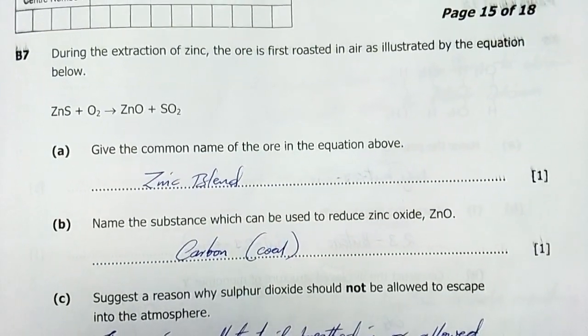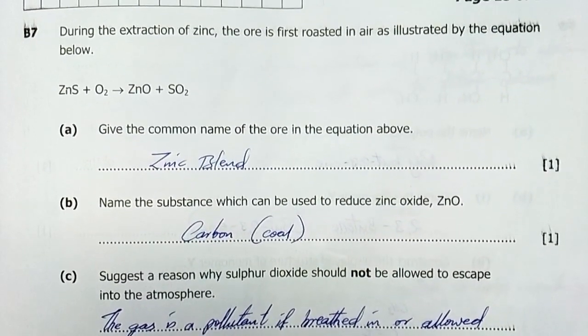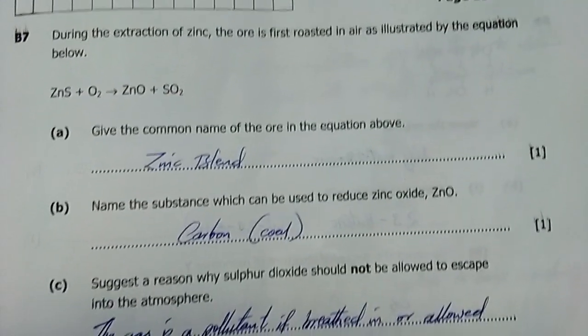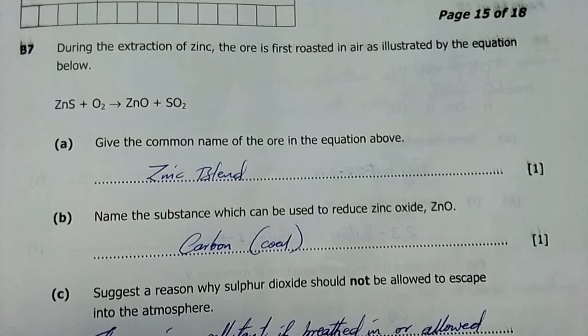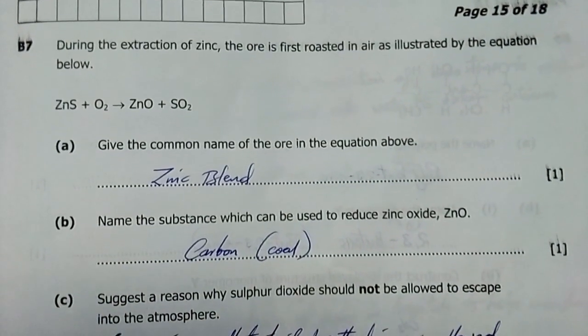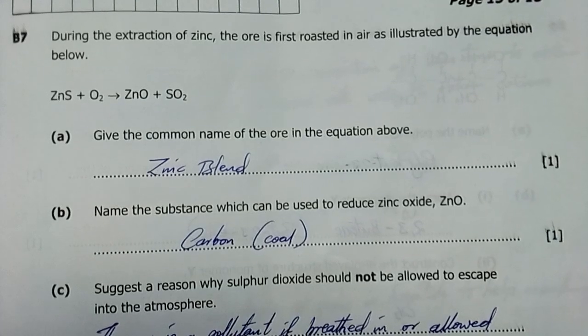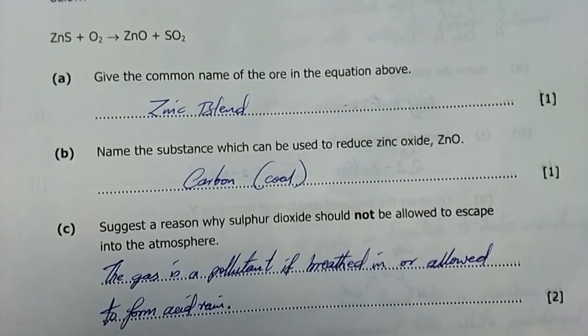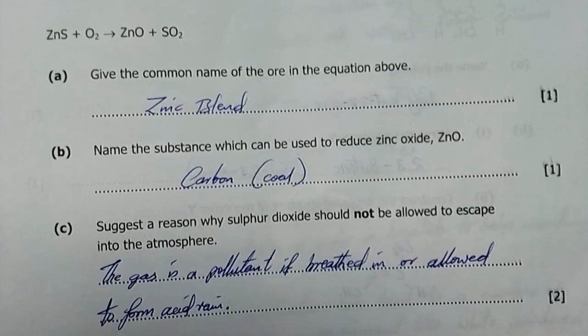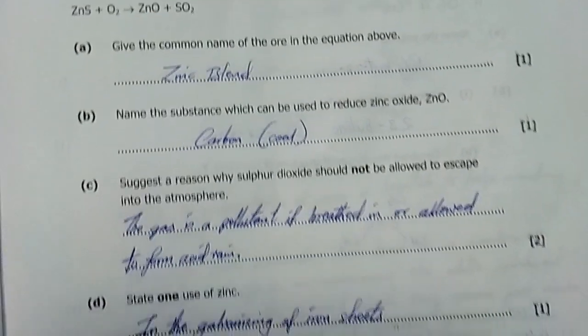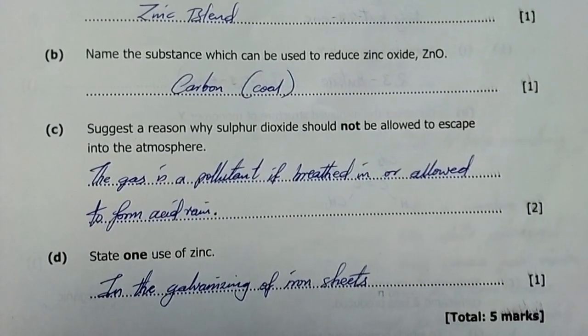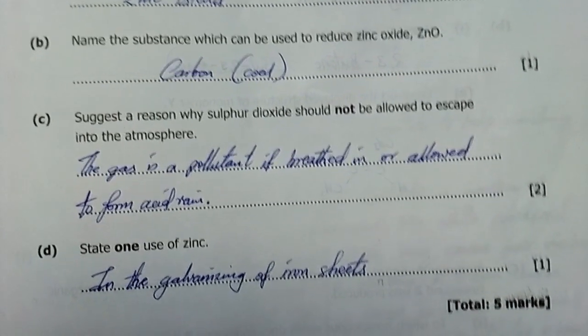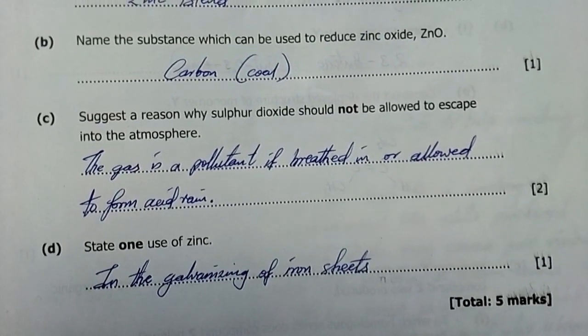During the extraction of zinc, the ore is first roasted in air. Give the common name for the ore in the equation: zinc blend. Name the substance which can be used to reduce zinc oxide: carbon, coal, or coke. Suggest a reason why sulfur dioxide should not be allowed to escape into the atmosphere. It's a pollutant if breathed or allowed to form acid rain.